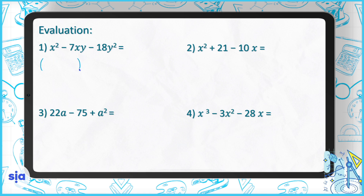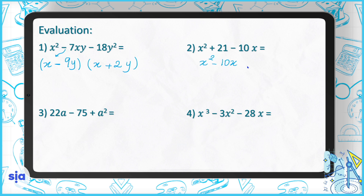Let's move on to the evaluation part. Question 1: we have two brackets, x and x. The first sign goes down as minus — minus times positive is negative. We're looking for two numbers whose product is 18 and whose difference is 7 — they are 9 and 2. Don't forget to write the y. Question 2: arrange it first as x squared minus 10x plus 21.